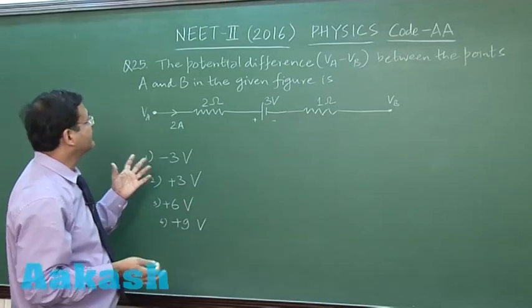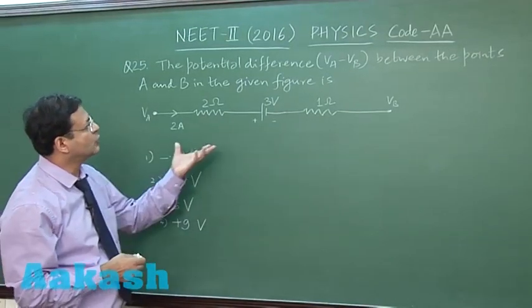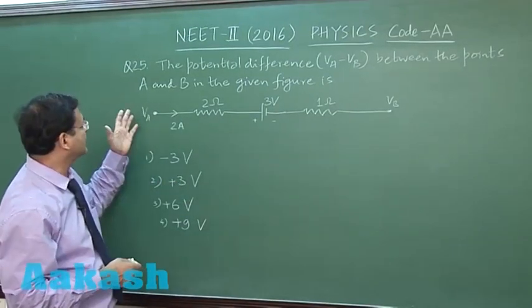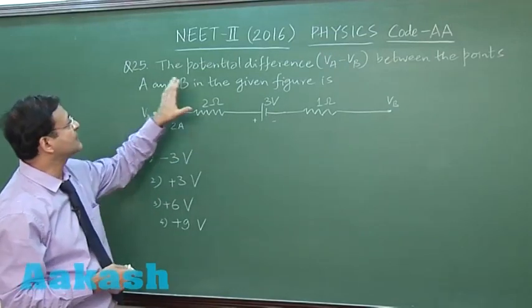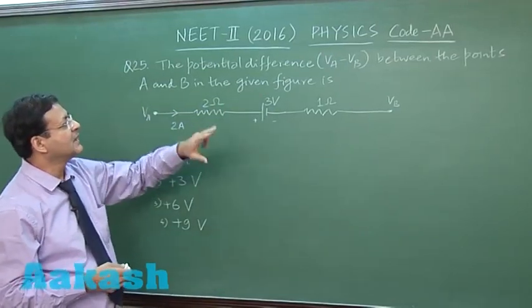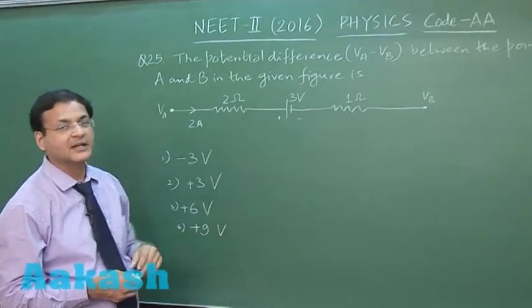Now let us switch over to question 25. Now this question 25 is very basic question in which Ohm's law can be used. You are supposed to calculate the potential difference between point A and B. It says that potential difference VA minus VB between the points A and B in the given figure is.